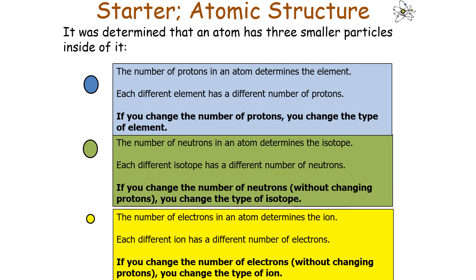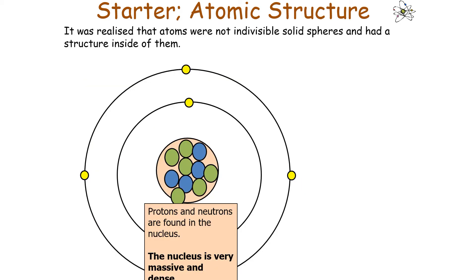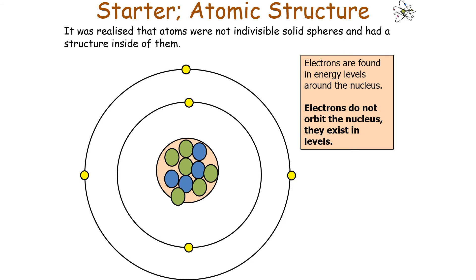When the proton number is altered, this takes precedence over all other changes — the proton takes priority. If you change the proton number, the atom becomes a new element. A new isotope or ion can only occur if there is no change in proton number. Protons and neutrons are found in the nucleus, making it very massive and very dense. Electrons are found in energy levels around the nucleus.